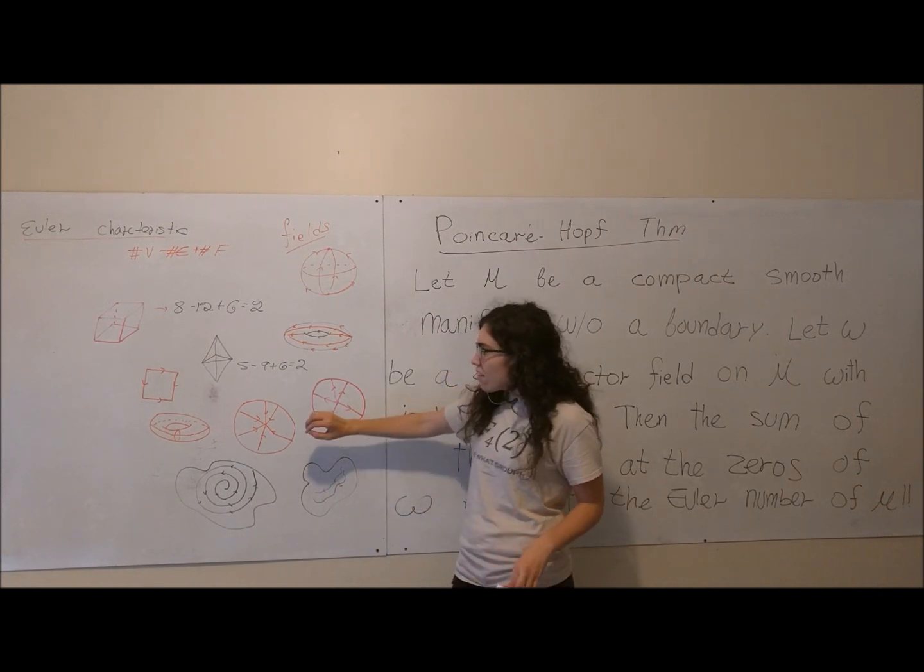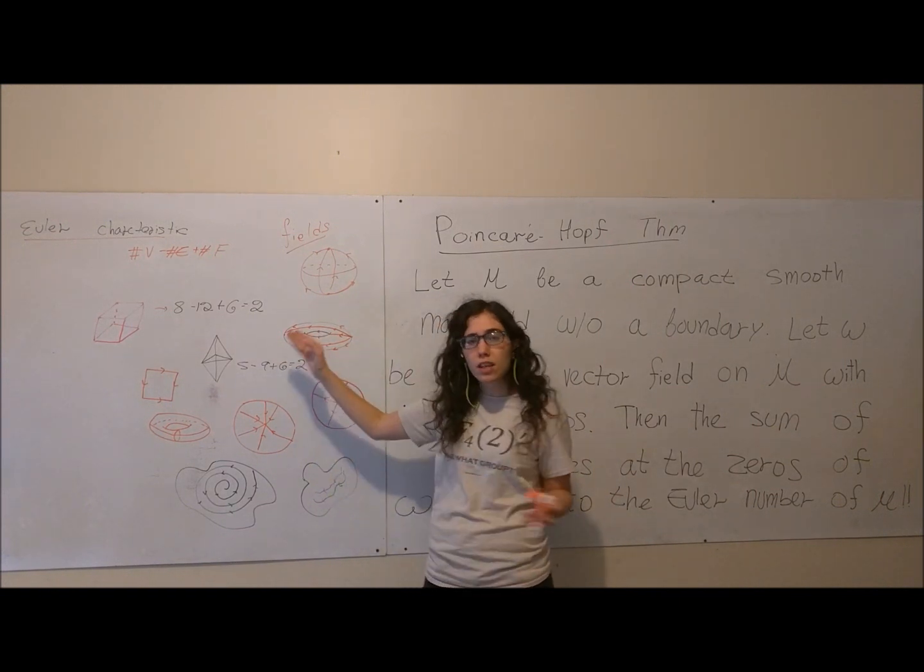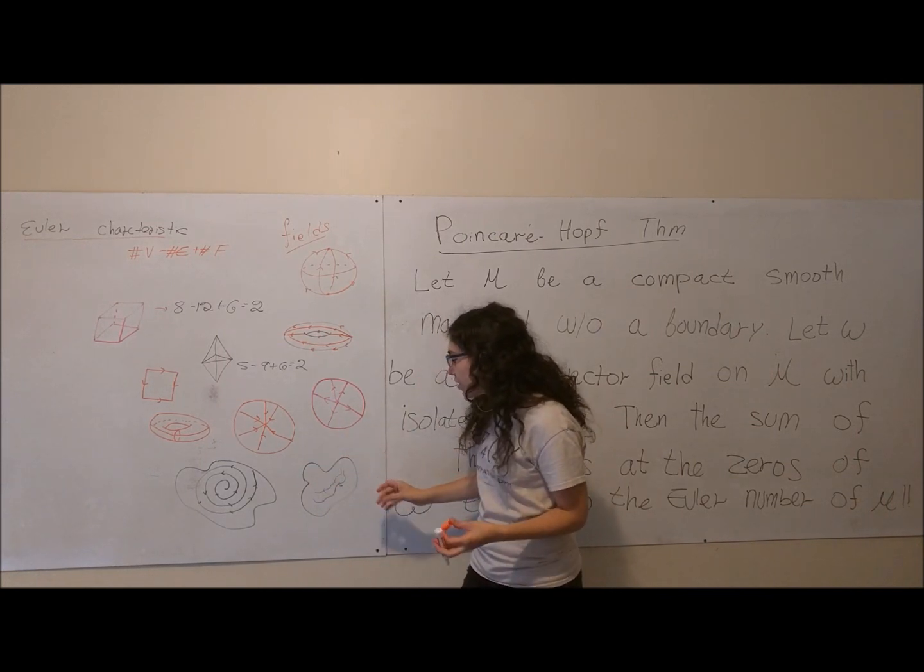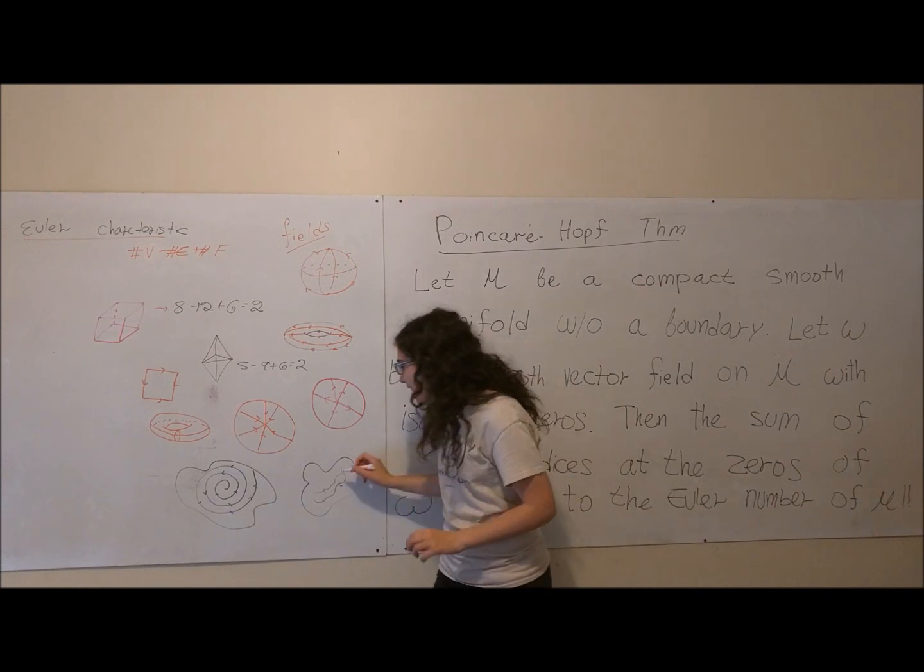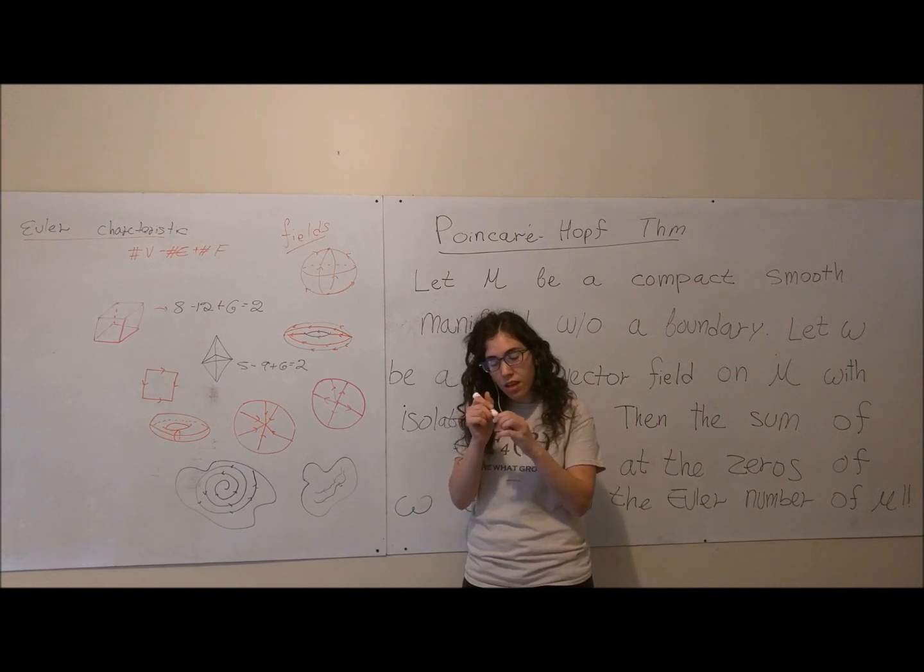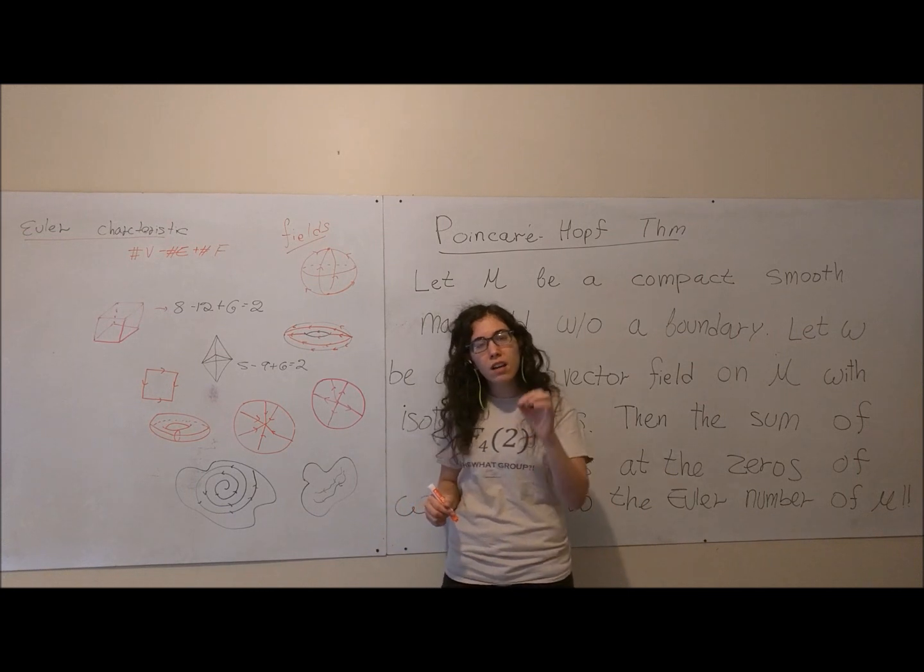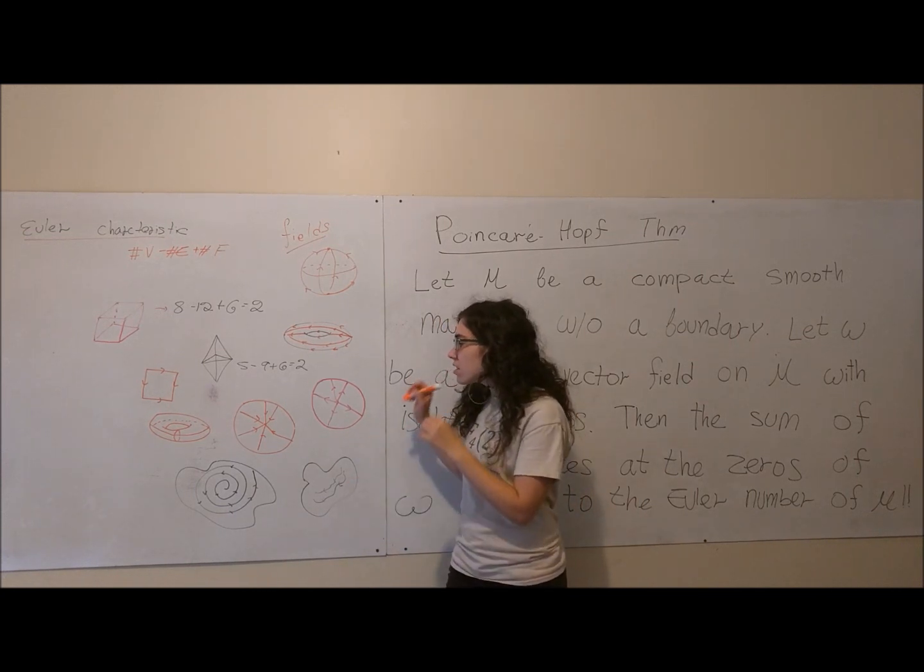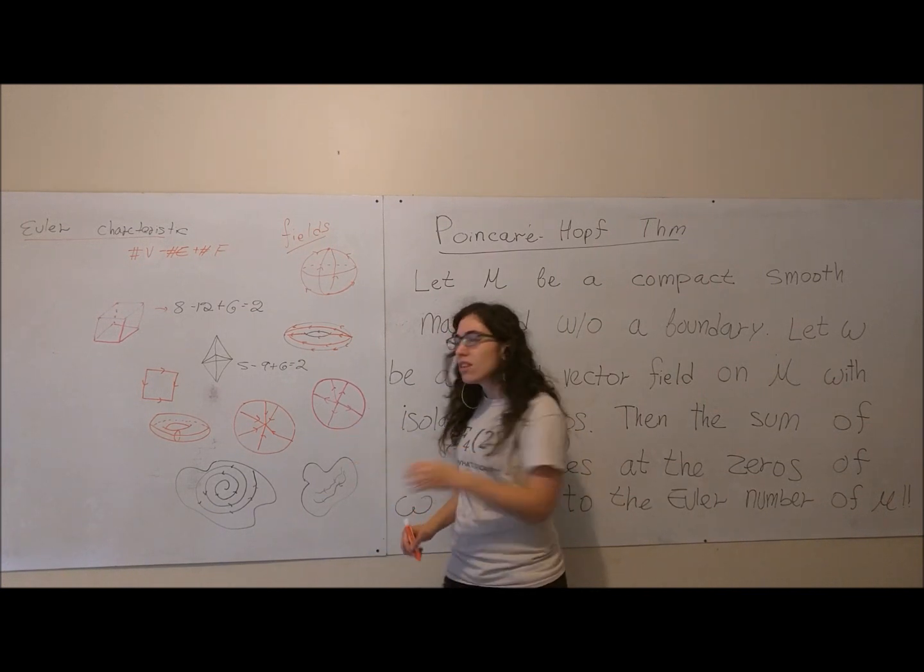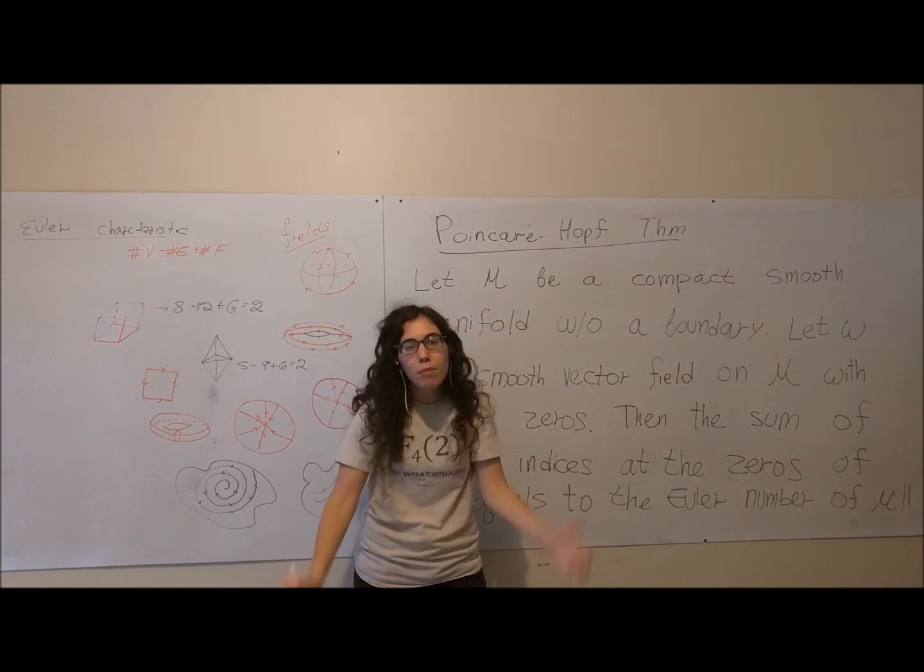You would assume that there is no relationship between the vector field on the surface and its Euler characteristic. After all, you can assign so many different vector fields and as long as you're doing it in a smooth way, you can really assign it in whichever way you want. But the Poincaré-Hopf theorem tells you that if you have a smooth compact surface, then the sum of the indices of the zeros equals its Euler characteristic. And of course, this is generalized to higher dimensions as well. And I find this mind-boggling.